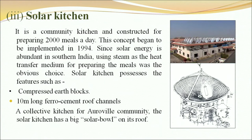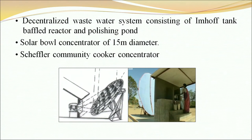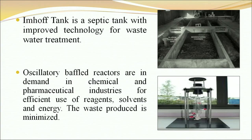The Solar Kitchen is a community kitchen constructed to prepare 2,000 meals a day. This concept began to be implemented in 1994. Since solar energy is abundant in southern India, using steam as a heat transfer medium for preparing meals was the obvious choice. The solar kitchen features compressed earth blocks, a 10-metre long ferro-cement roof channel, a collective kitchen for the Auroville community, a big solar bowl on its roof, a decentralized waste water system consisting of an In-Hoff tank, baffle reactor and polishing pond, and a solar bowl concentrator of 15-metre diameter. In-Hoff tanks are septic tanks with improved technology for waste water treatment. Acceleratory baffled reactors are used in chemical and pharmaceutical industries for efficient use of reagents, solvents and energy, and waste produced is minimized.